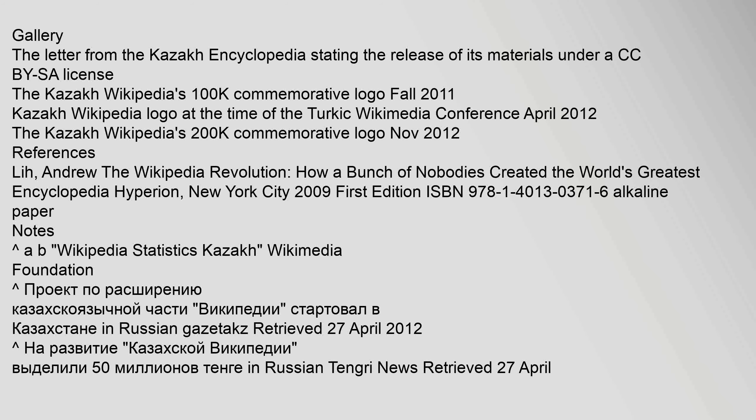Statistics: Origin of Views 2012.03–2013.02, Source: Kazakhstan. Gallery: The letter from the Kazakh Encyclopedia stating the release of its materials under a CC BY-SA license. The Kazakh Wikipedia's 100K Commemorative Logo, Fall 2011. Kazakh Wikipedia Logo at the time of the Turkic Wikimedia Conference, April 2012. The Kazakh Wikipedia's 200K Commemorative Logo, November 2012. References: Lih, Andrew — The Wikipedia Revolution: How a Bunch of Nobodies Created the World's Greatest Encyclopedia. Hyperion, New York City, 2009. First Edition. ISBN 978-1-4013-0371-6.